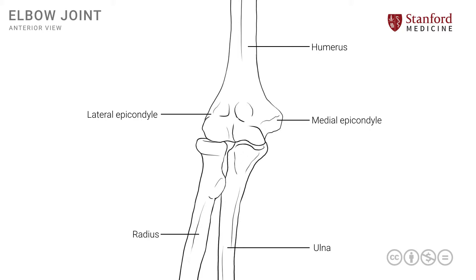Towards the center of the distal end are two other prominences that are covered by articular cartilage and participate in the formation of the elbow joint. The first is known as the trochlea, seen here on the more medial side of the condyles. The name trochlea means pulley-like and describes the shape of this structure. The other condyle on the lateral side is known as the capitulum, which is round and knobbly, resembling a head — hence the name capitulum.